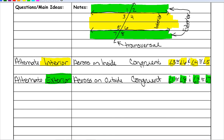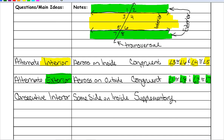The next angle pair is called consecutive interior angles. Consecutive means they will be on the same side, and interior means on the inside — same side inside. These angles are supplementary. Examples are angles 3 and 5, and angles 4 and 6, which are on the same side of the transversal between the two parallel lines. They add up to 180 degrees, and since they are interior they will all be yellow angles.